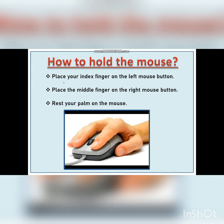How to hold the mouse: Place your index finger on the left mouse button. Place the middle finger on the right mouse button. Rest your palm on the mouse. The index finger is the first finger of your hand, which is placed on the left mouse button, and the middle finger is placed on the right mouse button.